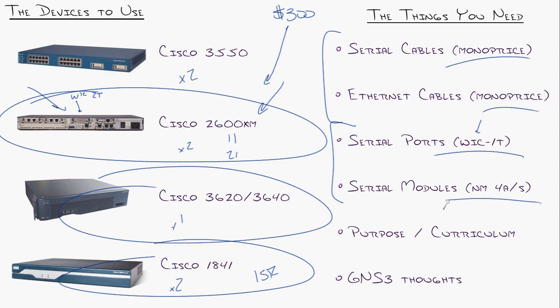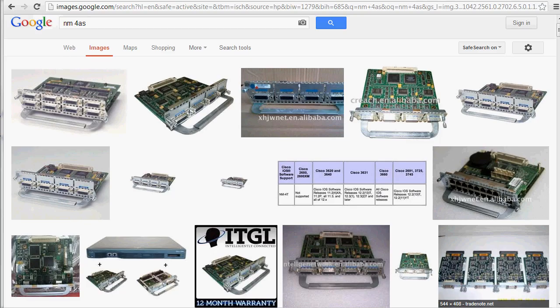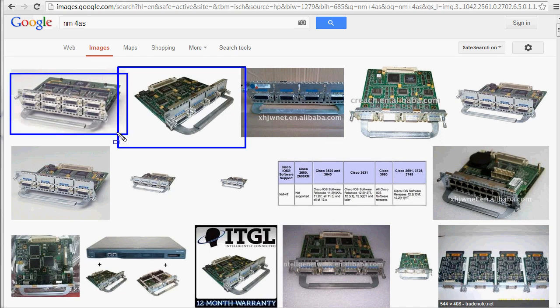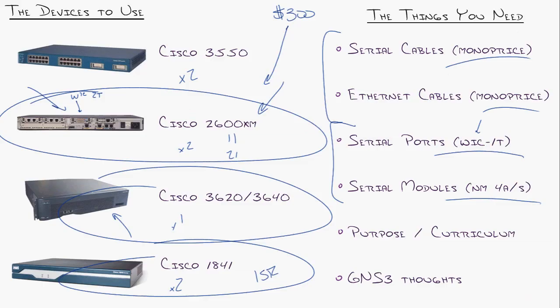Grab a serial module like an NM4AS or even an NM8AS, which are serial ports that you can put into that 3620 or 3640 and use it as a frame relay hub. Now, this is an NM4AS, they're very low speed, but for a lab environment, that's all you need, where you can connect four devices to that and you can configure it as a frame relay switch or just a central hub, whatever you want to do. Right over there is an NM8AS.